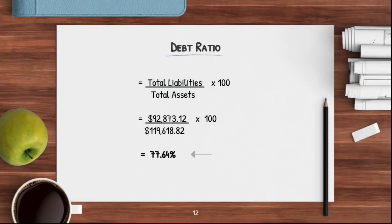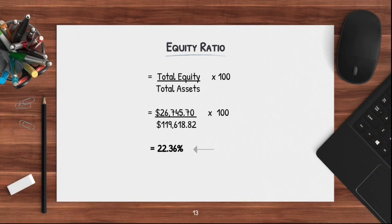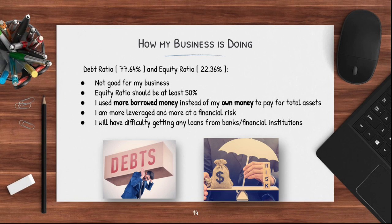To calculate my debt ratio, I divided the total liabilities by the total assets, multiplied the answer by 100, and got 77.64%. When I calculated my equity ratio, I got 22.36%. This is really bad for my business because my equity ratio should be at least 50%. What I calculated shows that I use more borrowed money instead of my own money to pay for the assets for my business. It means that I am more leveraged and at more financial risk. If other people see these percentages, it will be difficult for my business to obtain any loans from banks or financial institutions.